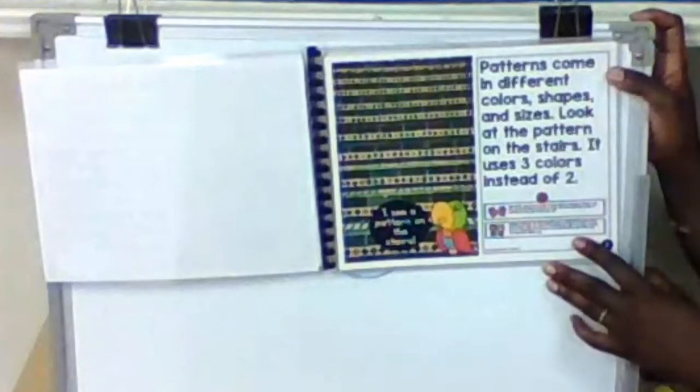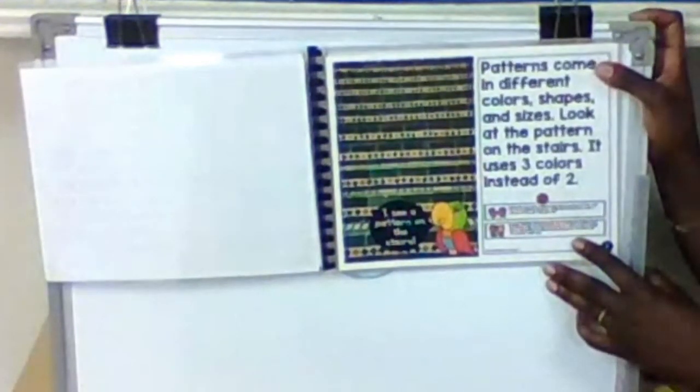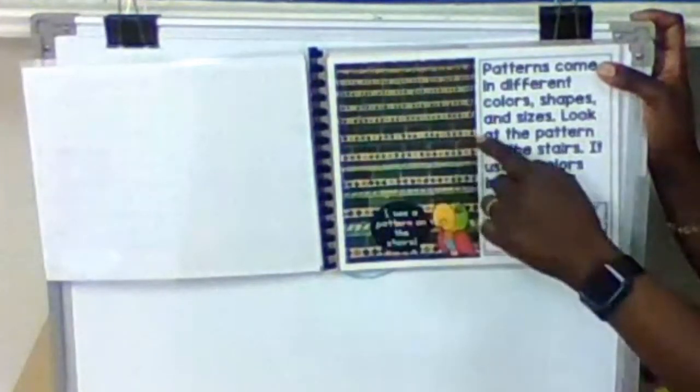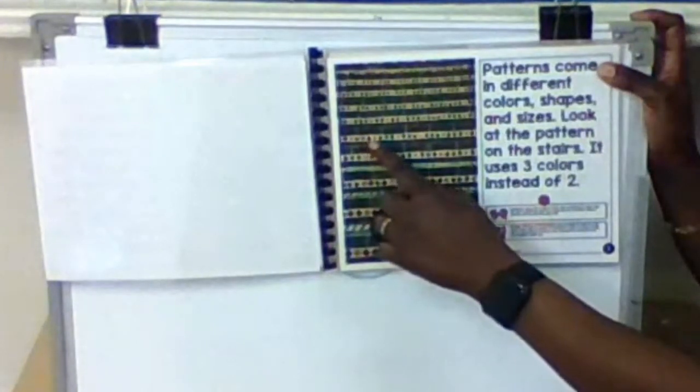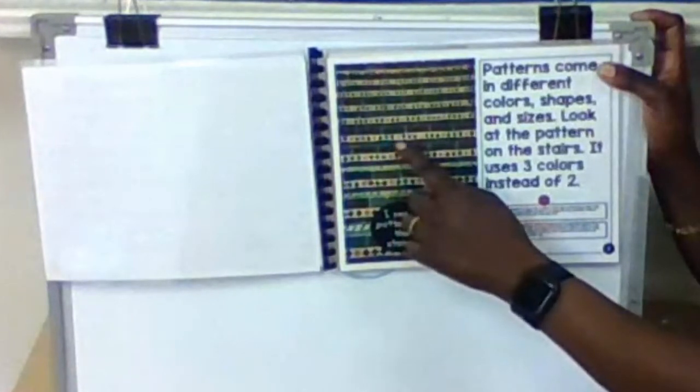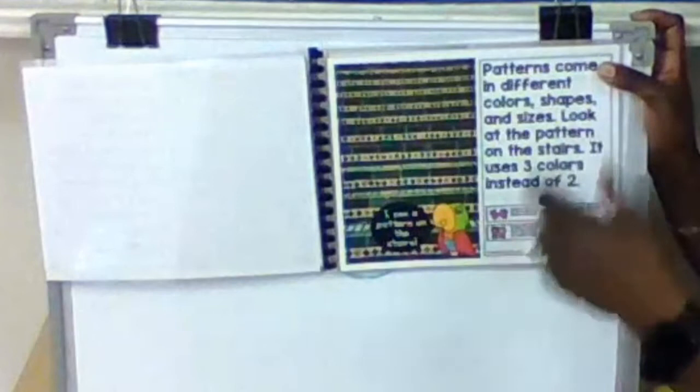Patterns come in different colors, shapes, and sizes. Look at the pattern on the stairs. It uses three colors instead of two. So you see those diamonds right there? It's yellow, blue, green. Blue, yellow, blue, green. Blue, yellow, blue, green. It keeps repeating itself over and over and over and over.